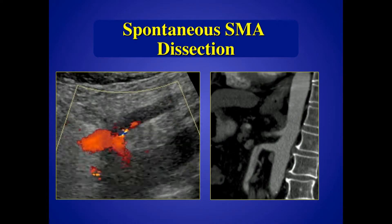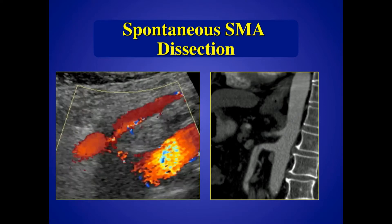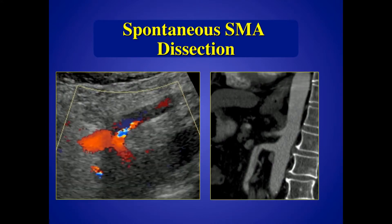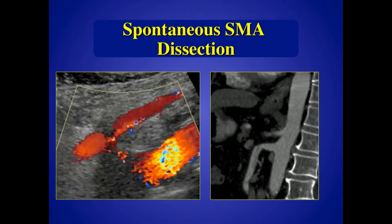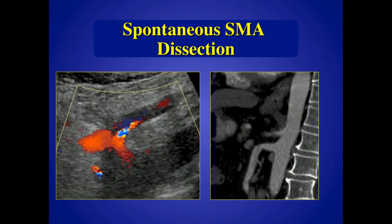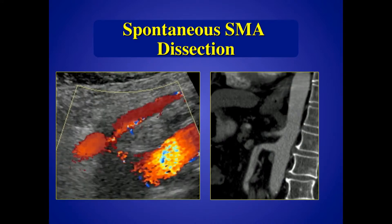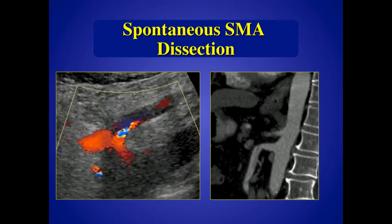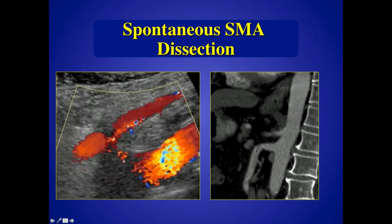Sometimes you'll just pick up another abnormality. Here's a case of a dissection — most of them are incidentally picked up. Some have had a dissection known on a prior CT scan, usually an extension of a thoracic dissection that's moved into the abdomen. Here you can clearly see a dissection — the best way to see it is to turn the color off and see the flap. But with the color on you can see the double lumen and the delayed fill-in of the false lumen in diastole. Here you can see it pretty well on the CT scan.